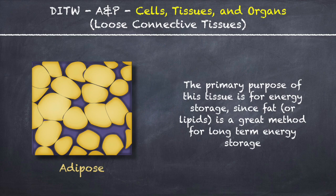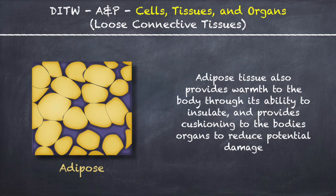The primary purpose of adipose tissue is for energy storage, since fat or lipids is a great method for long-term energy storage. Adipose tissue also provides warmth to the body through its ability to insulate, and provides cushioning to the body's organs to reduce potential damage.